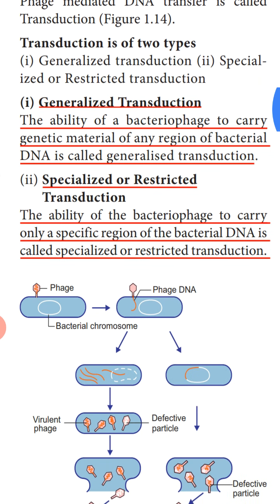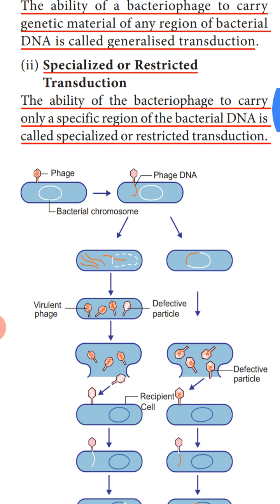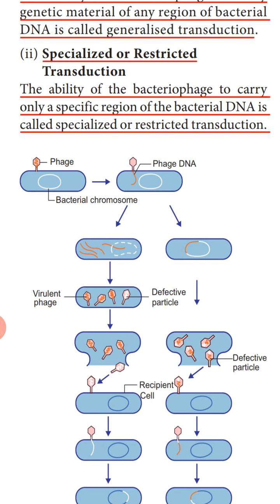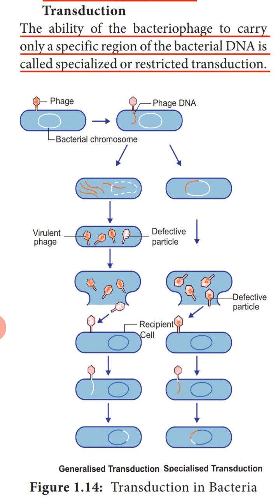In specialized or restricted transduction, the bacteriophage carries only a specific region of the bacterial DNA. In the diagram, the phage is shown outside the bacterial cell with the bacterial chromosome marked. Next, the phage DNA enters inside the bacterial cell. Two types of gene transfer can occur: either generalized or specialized.